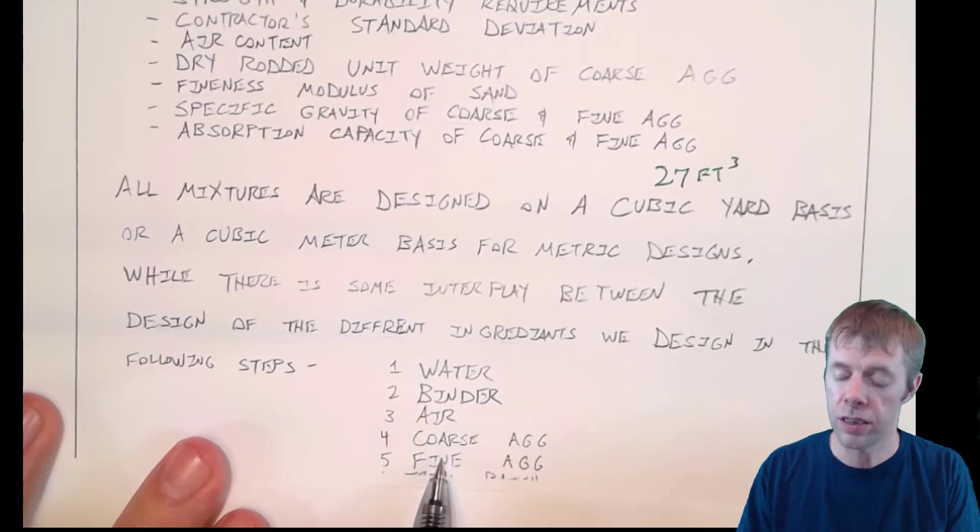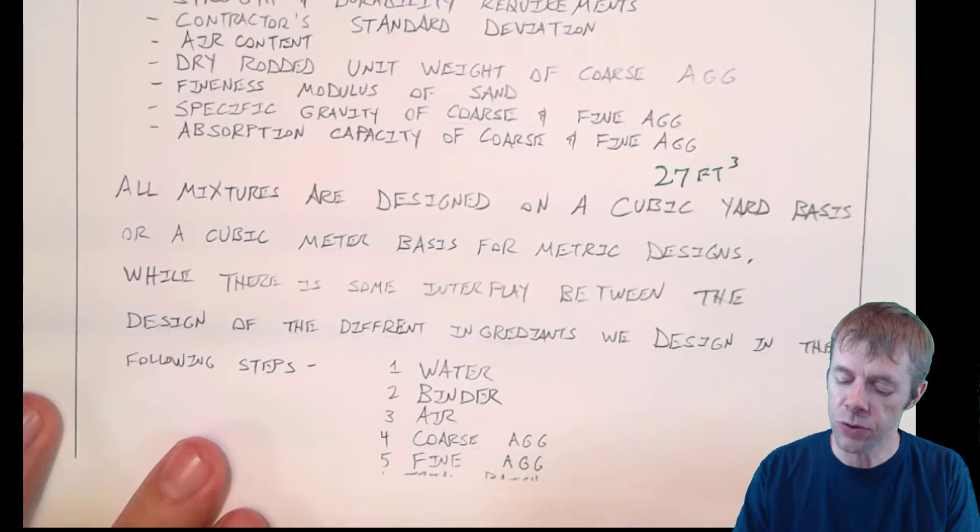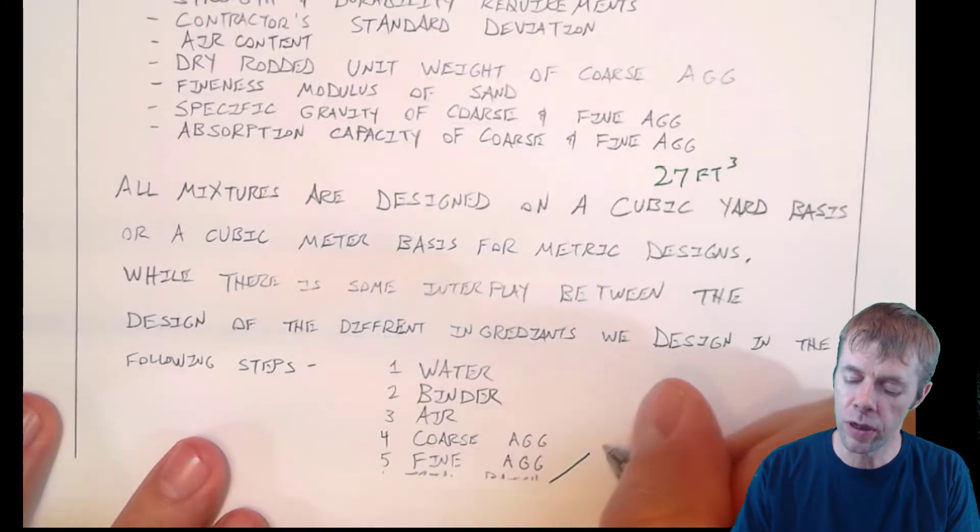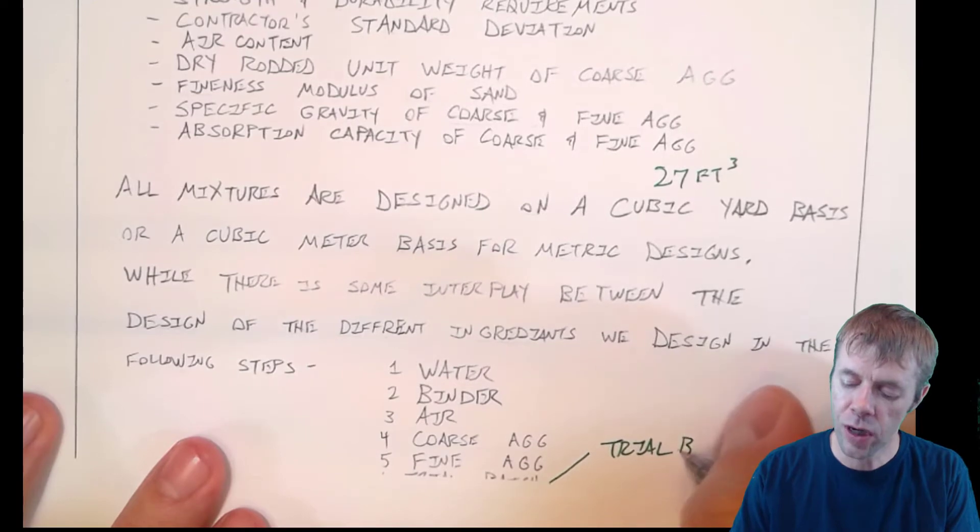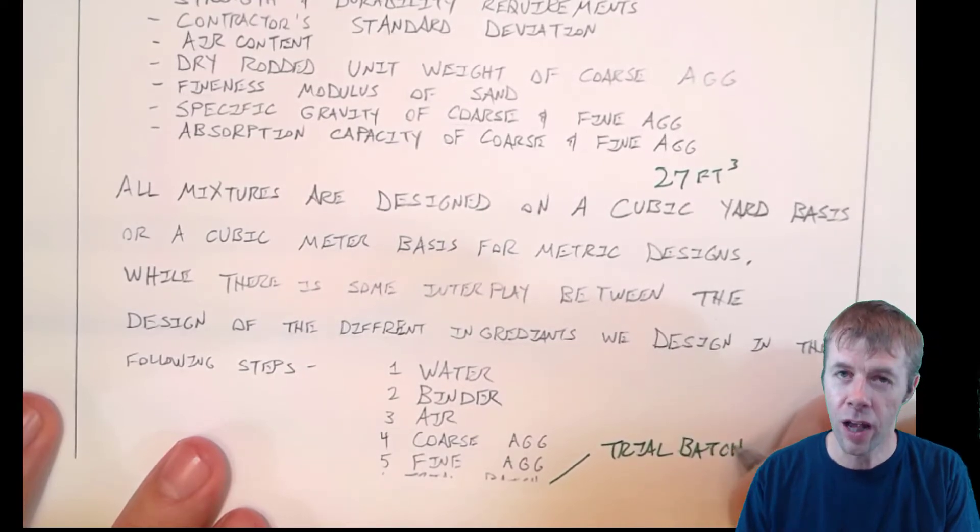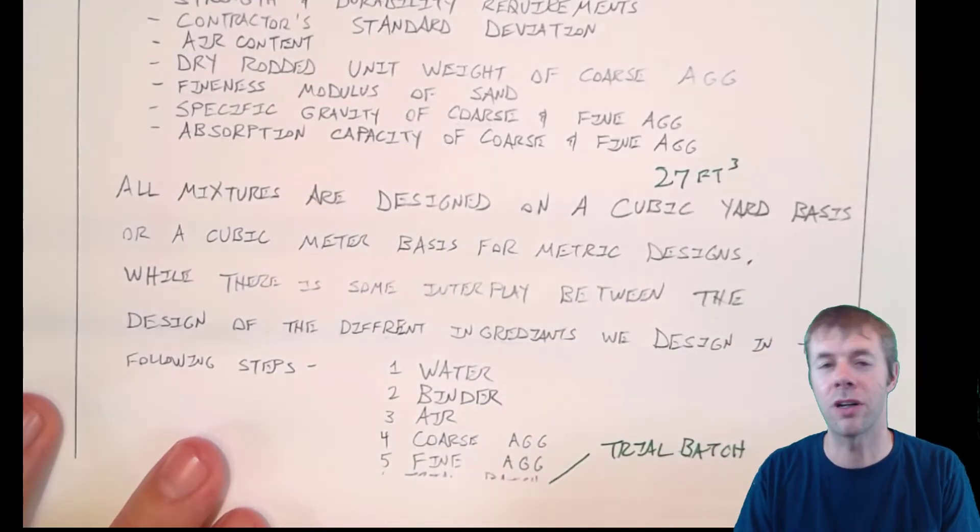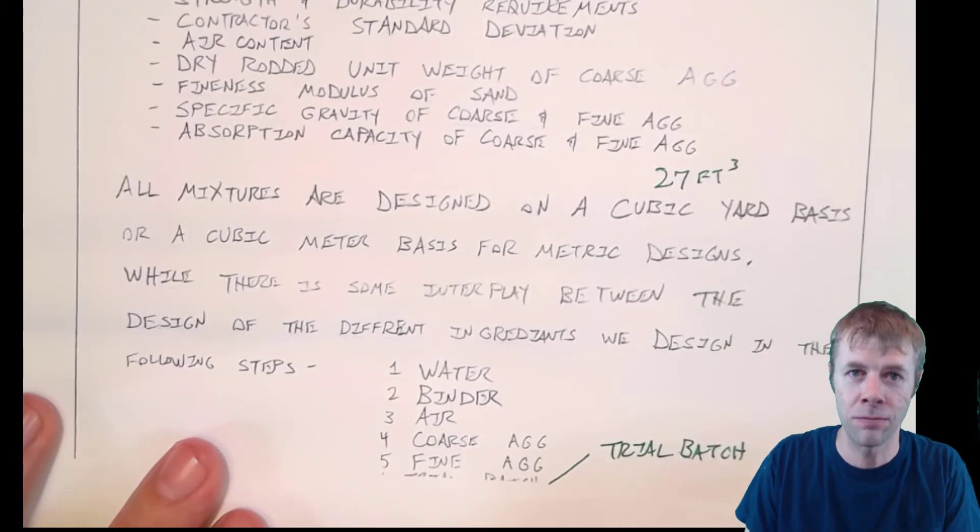the coarse aggregate, the fine aggregate. And this last one down here is a really important one. It's kind of fitting that it got cut off the bottom because then you have to trial batch. And a lot of people forget about trial batching.